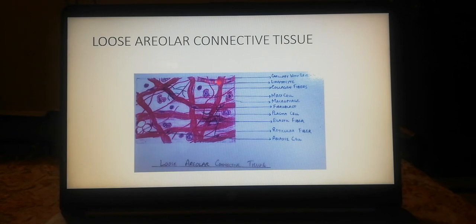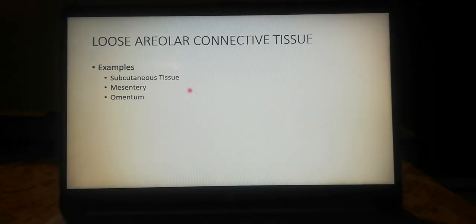Small blood vessels run in the ground substance and supply the cells with oxygen and nutrients. Fine fibers can also be found in the ground substance. It is present in the subcutaneous tissue as superficial and deep fascia, within the mesentery of the intestine, and within the omentum, greater and lesser omentum.